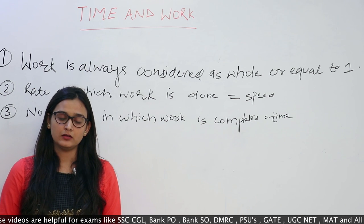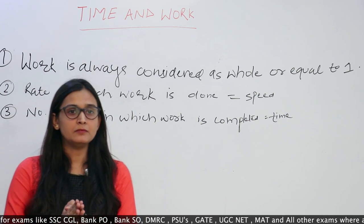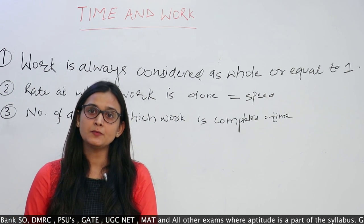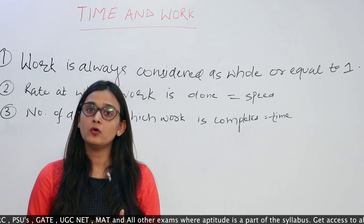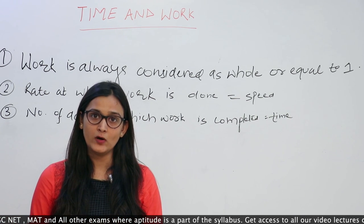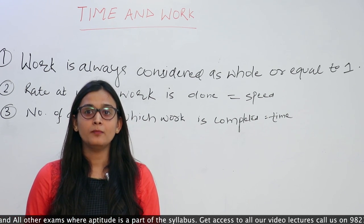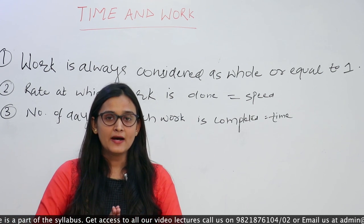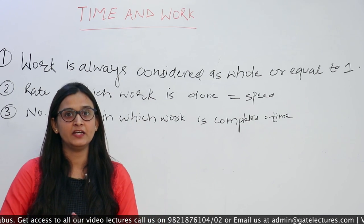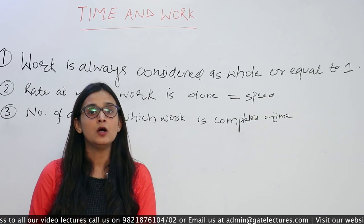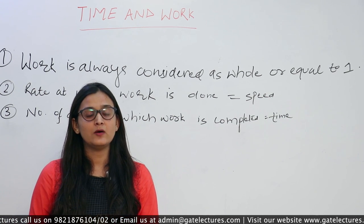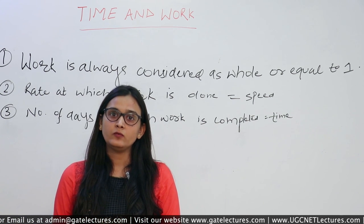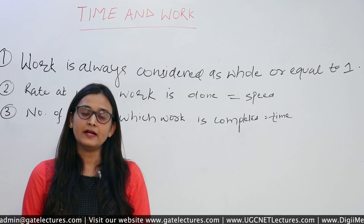First of all, we define work. So what is work? If we talk about technical terms, work is the quantity of energy that is transferred from one system to another system. But for problems based on this topic, we define work as the amount of job that is assigned or the amount of job that is actually done. The topic of work is our application based on ratio of time and speed. In this chapter, we consider the work as a whole or equal to one. There always exists an analogy between time, speed, distance problems and work problems.